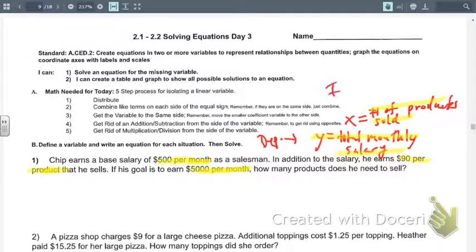So your dependent variable is always going to be your Y. Your independent variable is always going to be your X. The reason I said that our Y was the total monthly salary is because the monthly salary depends on the number of products sold. So the Y is your dependent variable and your X is the independent.